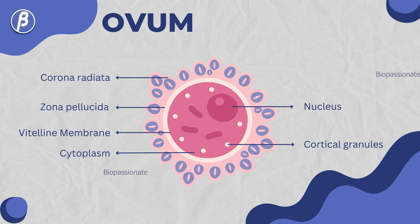A vitelline membrane, zona pellucida, and corona radiata are some of the egg envelopes that enclose the structure of the egg.